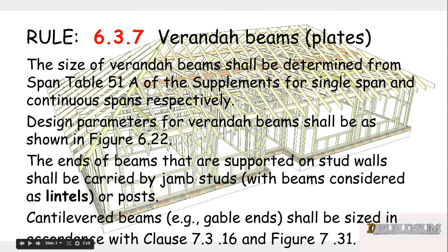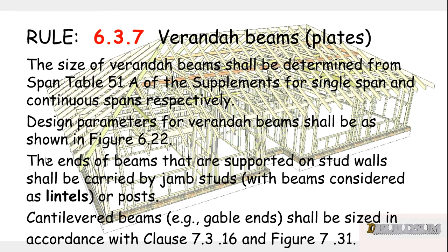Rule 6.3.7 on veranda beams says that the size of the veranda beams shall be determined from span table 51a of the supplement for single span and continuous span respectively. Design parameters for veranda beams shall be as shown in figure 6.22. Pertinent to our example: the ends of beams that are supported on stud walls shall be carried by jam studs, with beams considered as lintels or posts. Cantilevered beams at gable ends shall be sized in accordance with clause 7.3.16 and figure 7.31.